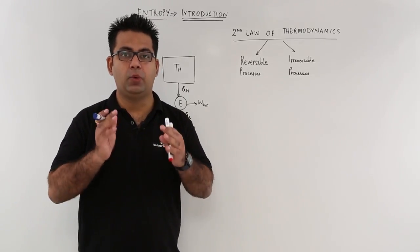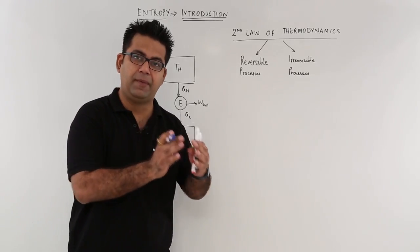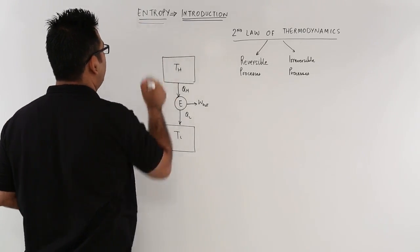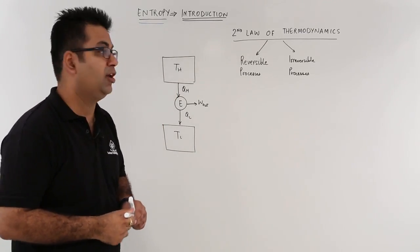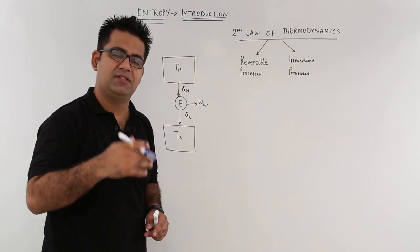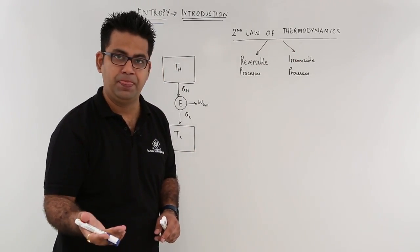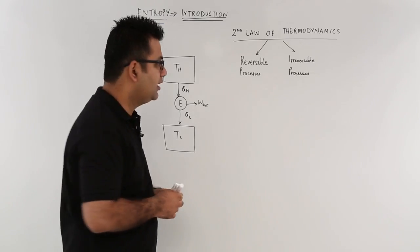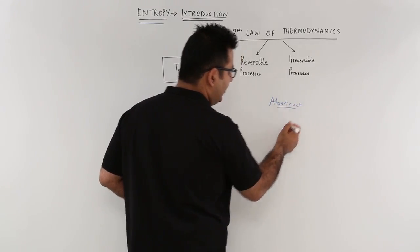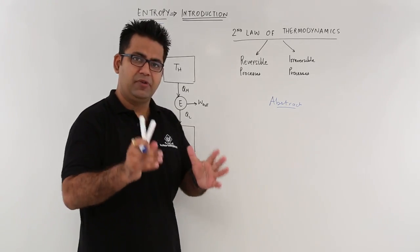After understanding the second law of thermodynamics and defining it with the help of the Kelvin-Planck statement and Clausius statement, let's come to a topic which is very important — entropy. Entropy is a very integral part of the second law of thermodynamics, and sometimes we also call the second law as the law of entropy. Now entropy is a very abstract term, meaning it is very difficult to define.